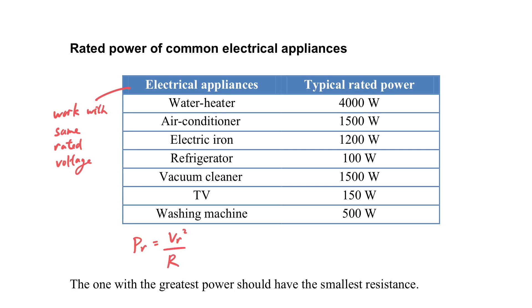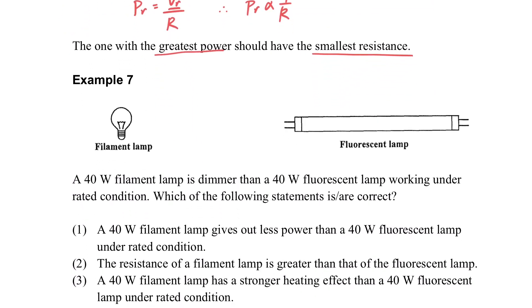By P = V²/R, since they work with the same rated voltage, their rated power will be inversely proportional to the resistance. So those with greater power will have smaller resistance.